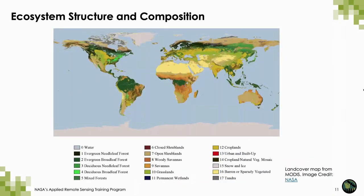Remote sensing is frequently used to generate maps of terrestrial ecosystems, often based on a map that delineates different vegetation types or land uses. These types of maps identify discrete categories of land cover. They can be generated using a variety of classification schemes and are improved with local ground data and knowledge. There are also limitations to these maps, and it's important to consider accuracy assessments when creating them. We have previous RSET trainings on land cover mapping and accuracy assessment available on our website.